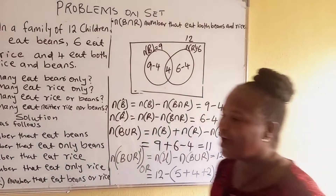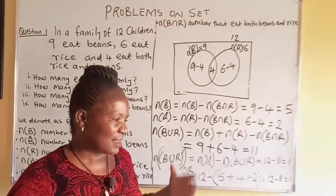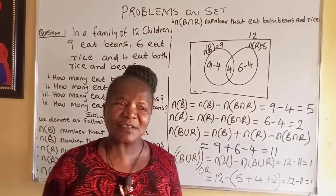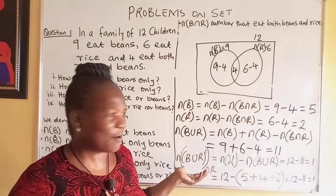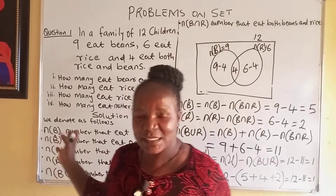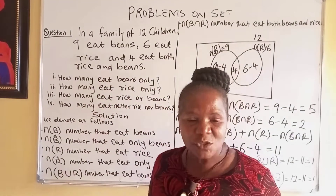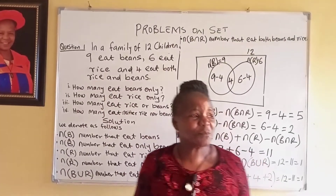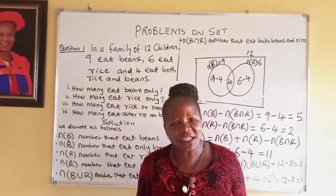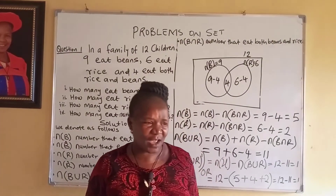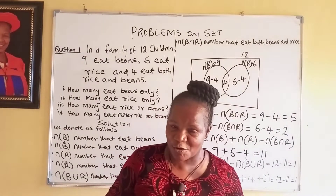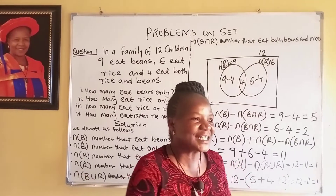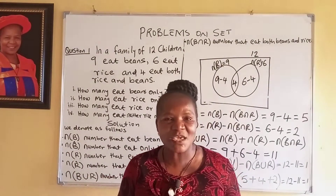So you have 1 person who doesn't eat beans and also doesn't eat rice. You can now see a life problem — when we talk about all these things we are writing on the board, you can see how we now use it to resolve this particular problem. What is the significance? You need to know all these things because you have to budget for certain things. You need to know which food they eat and then make your budget, so that you don't have a budget that favors some and doesn't favor others. There is a need to consider everybody in the family when making your budget.